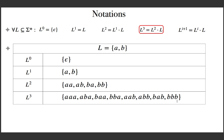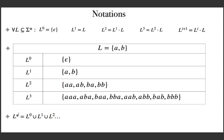Now we can define the Kleene iteration of a language, L-star, also known as the star closure of L. It is defined as the infinite union: L raised to 0, union L raised to 1, union L raised to 2, and so on — the union of all these languages. We will see an example later.